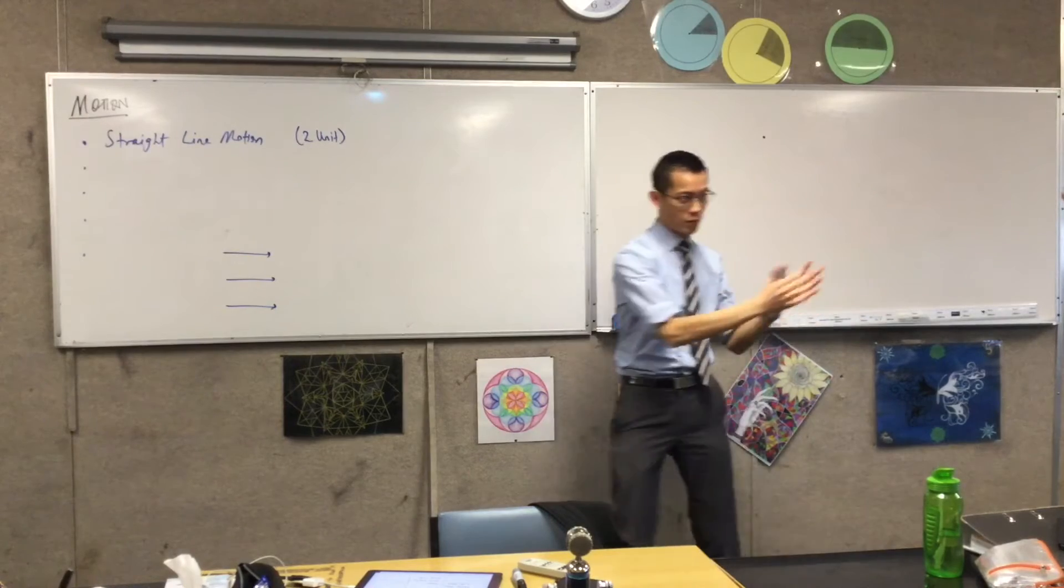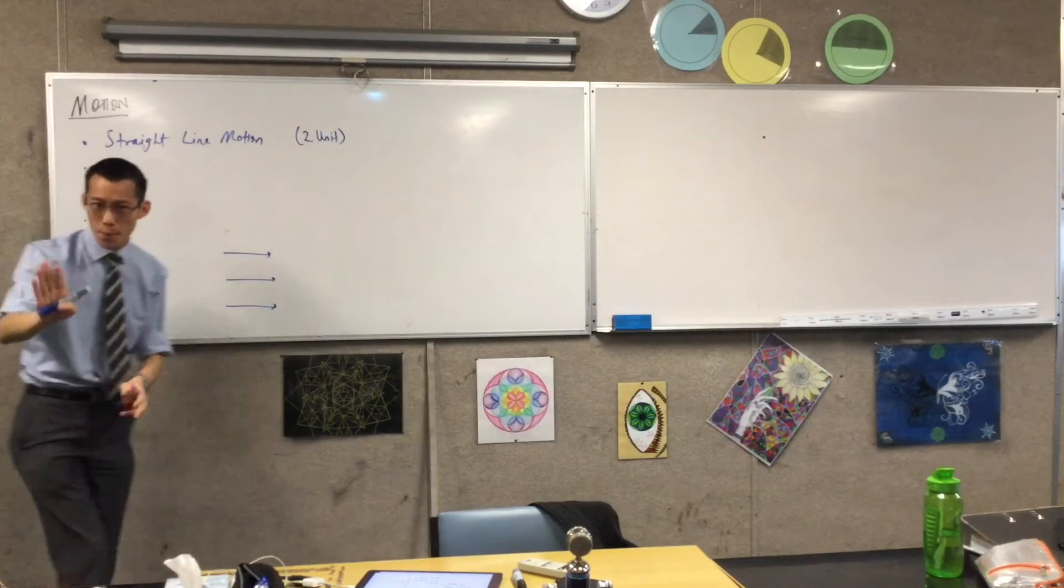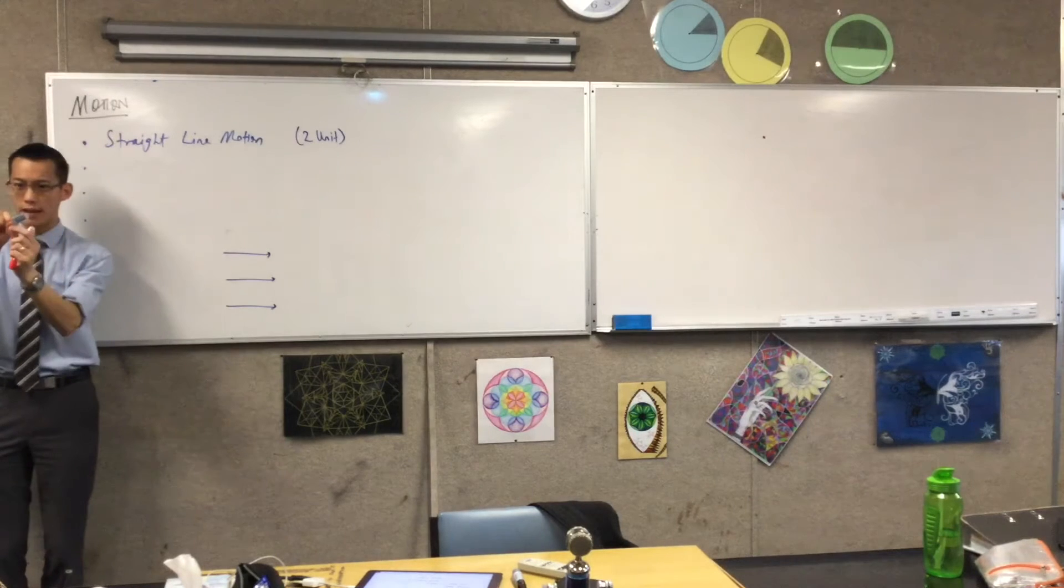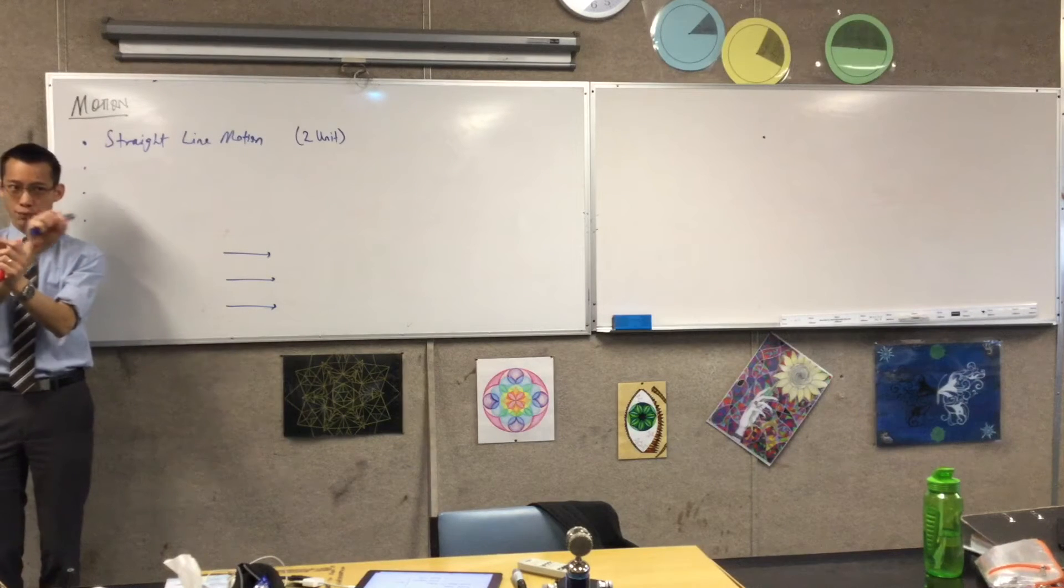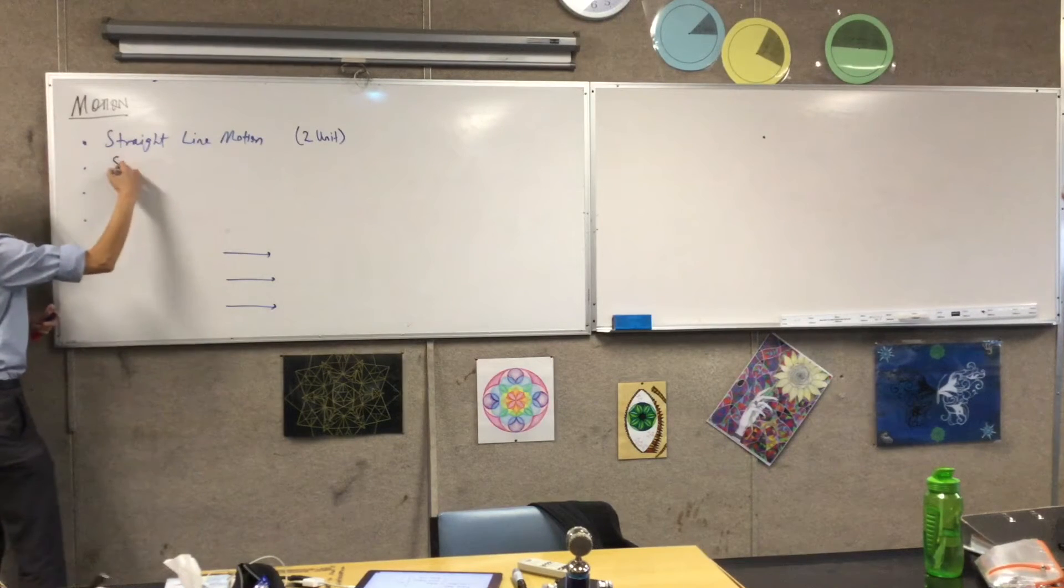Now, as extension one students, we then extend that a little bit. We say, just for a moment, stay in your straight line. But if what you've got on your straight line is moving in a very particular, predictable way, we call it simple harmonic motion.